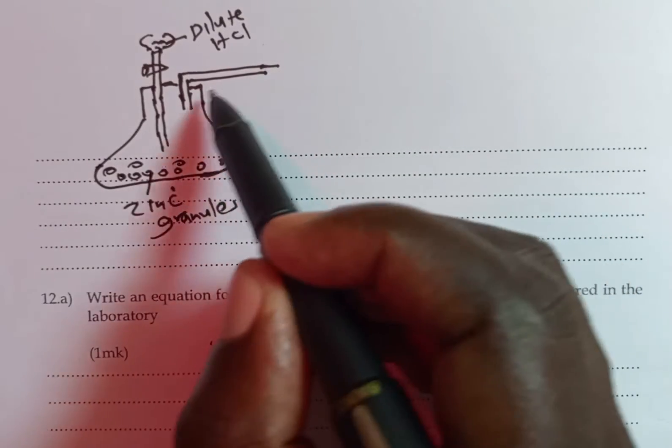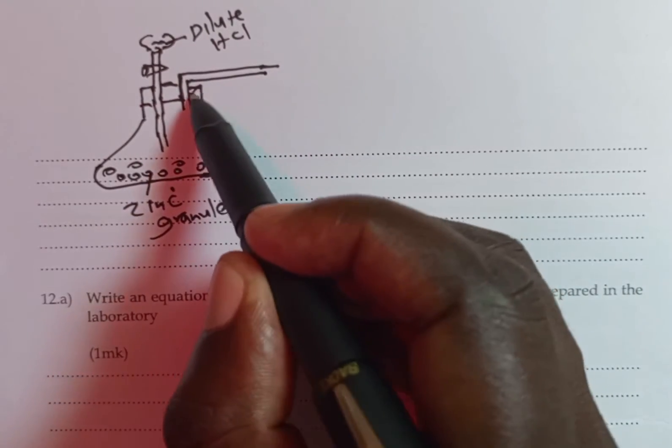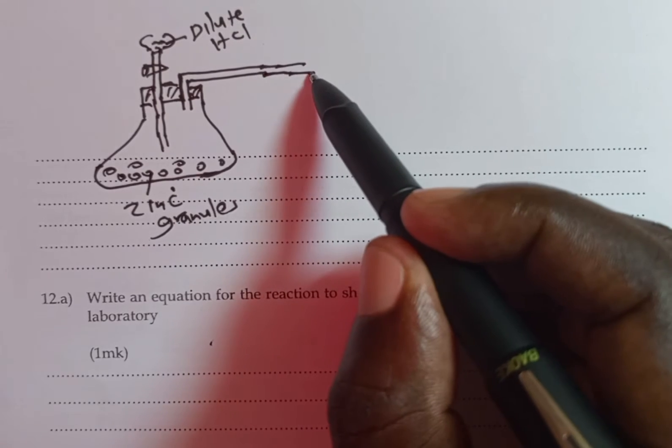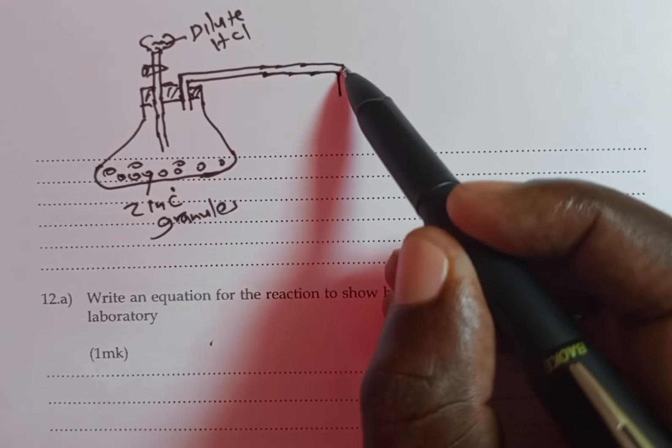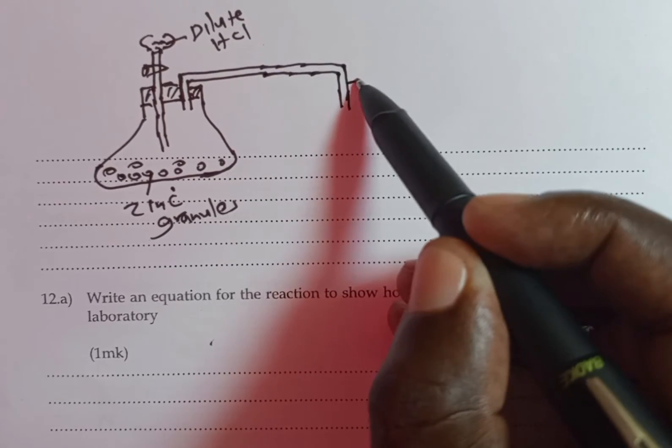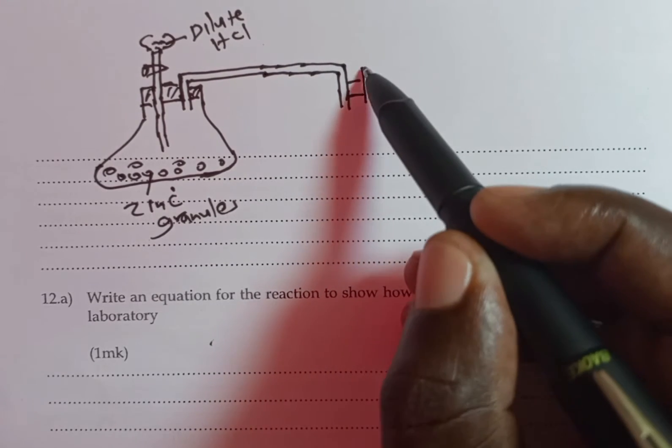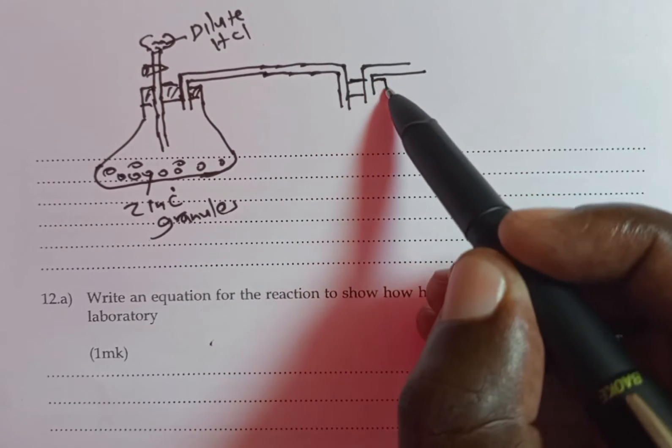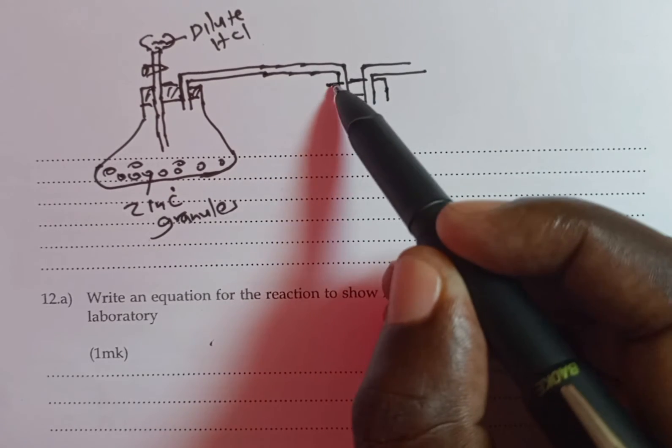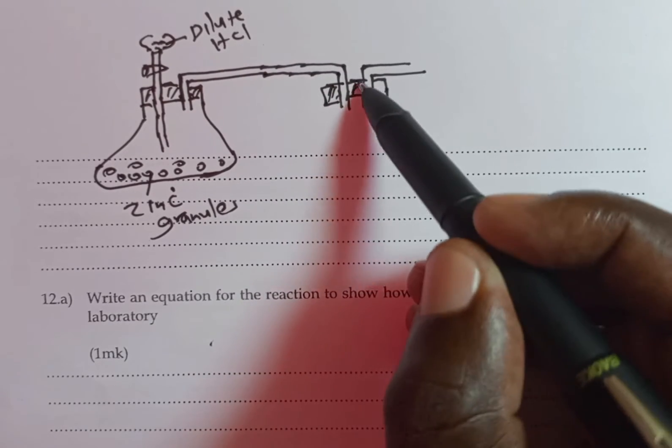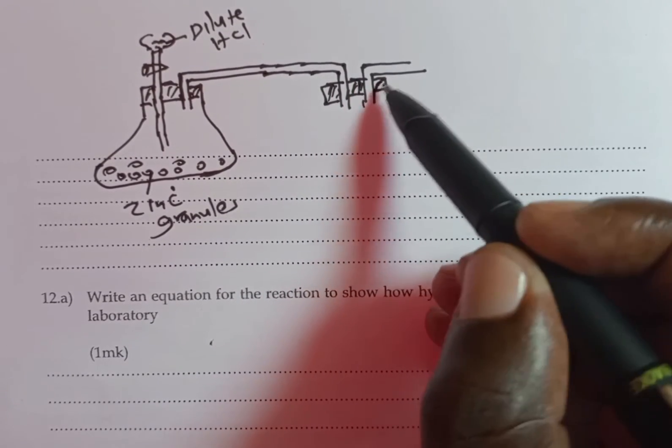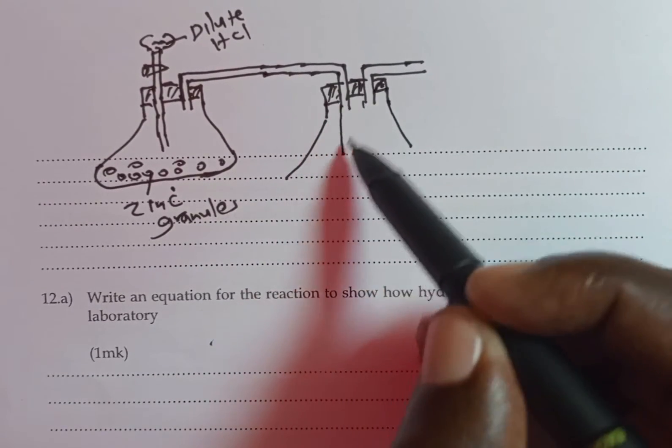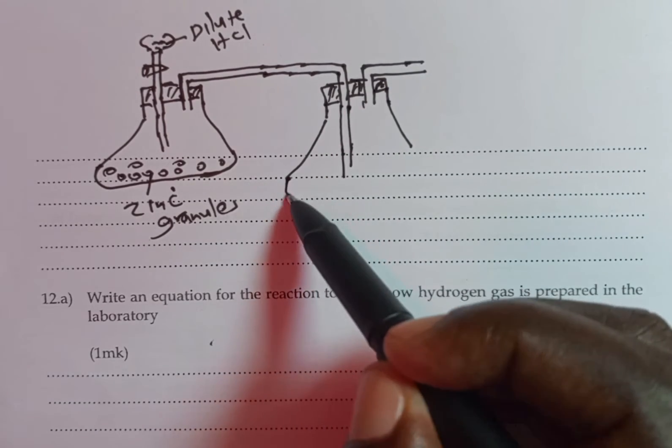From this reaction vessel, we have the delivery tube that will direct the hydrogen produced into the drying vessel. So this is what we have.